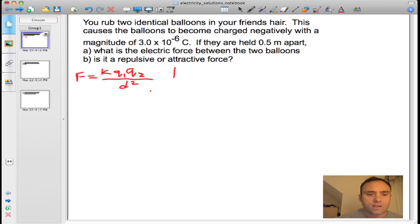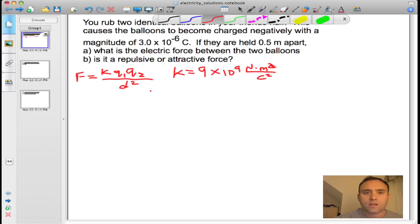Where k, again, is the electrostatic constant. And for that, we're going to use 9 times 10 to the ninth newtons meters squared per coulomb squared. Okay, so as always, it's a good idea to define the variables. We're going to do that right now.